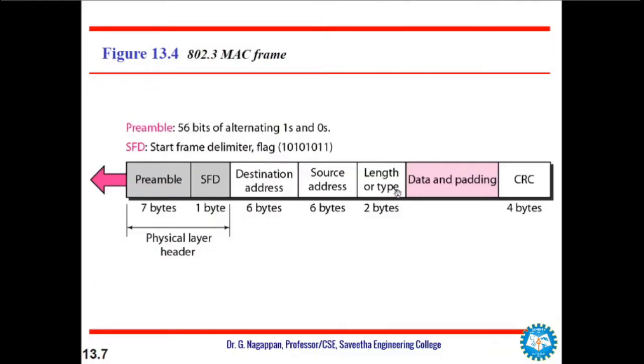Now, coming to 802.3 MAC frame, this Ethernet frame structure contains the preamble of 56 bits of alternating 1s and 0s.